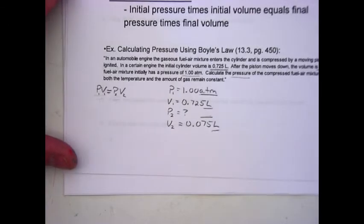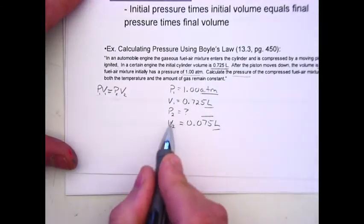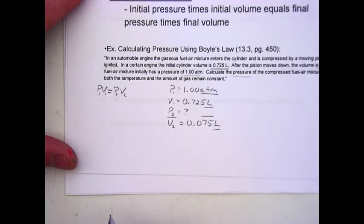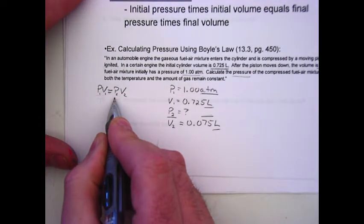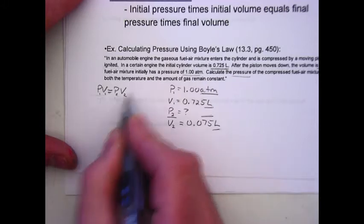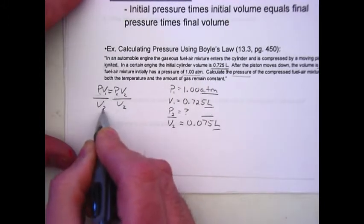Next, using algebra, we are going to take this formula and rearrange it to isolate the unknown, which in this case is P2. Since P2 is currently on top, all we need to do is divide both sides by V2 to isolate it.